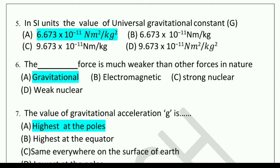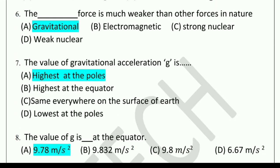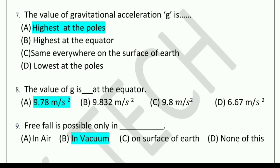Sixth question: The dash force is much weaker than other forces in nature. The answer is gravitational force. Seventh question: The value of gravitational acceleration g is dash. Options: highest at the poles, highest at the equator, same everywhere on the surface of the earth, or lowest at the poles. The correct answer is highest at the poles.